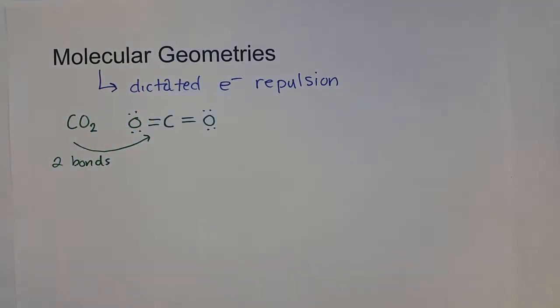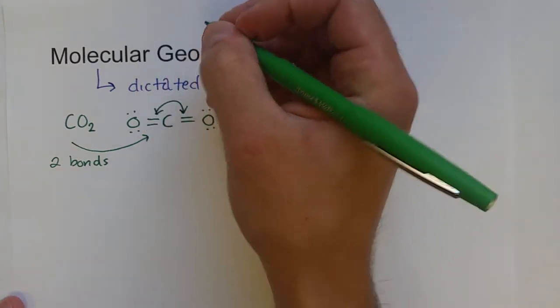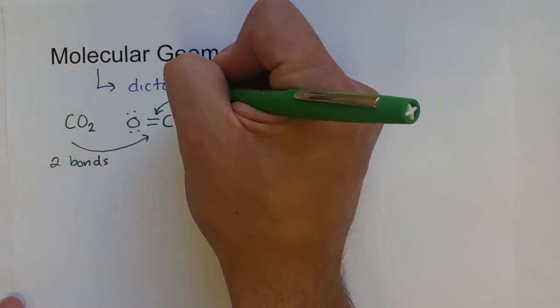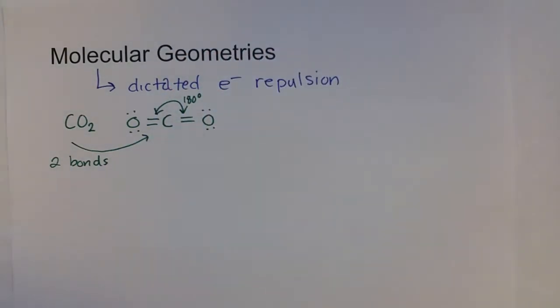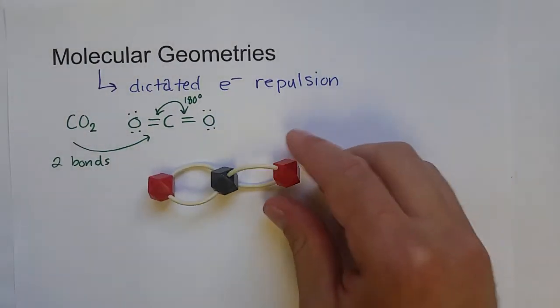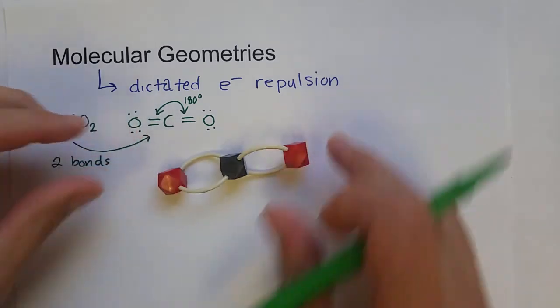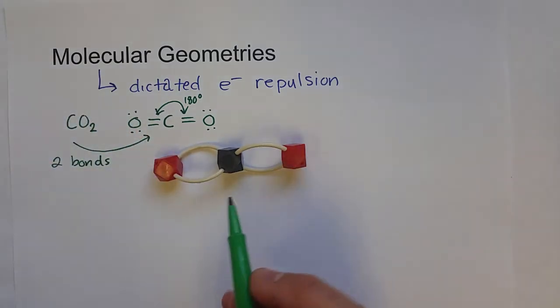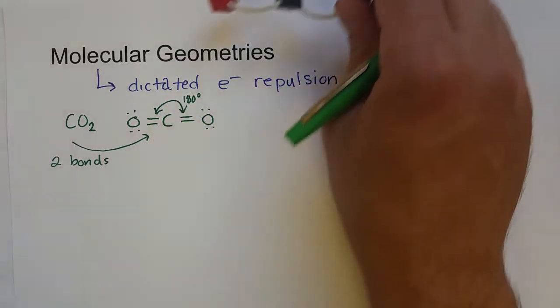Alright? How far can these two electron groups get away from each other? It turns out that they can always get away from each other 180 degrees on average. And so carbon dioxide will always take this kind of shape, where the atoms will pretty much line up in a straight line. They vibrate a little bit depending on the temperature, but on average they can get away from each other 180 degrees.